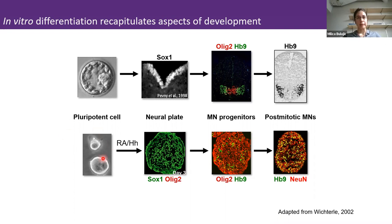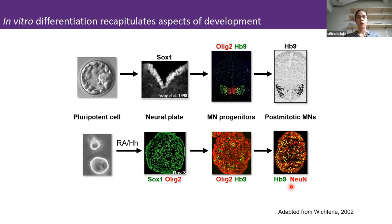By treating mouse embryonic stem cells with the patterning signals retinoic acid and sonic hedgehog, these cells differentiate into motor neurons by transitioning through all of the relevant progenitor stages, thereby recapitulating not only the cell fate but also the timing of these key developmental processes. This strategy allows us to have not only a homogeneous relevant population of cells, but also a time series where we had access to progenitors that would be difficult to isolate.